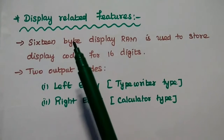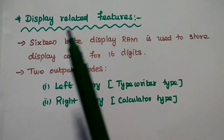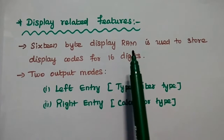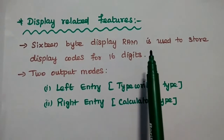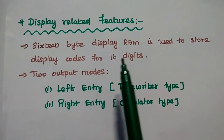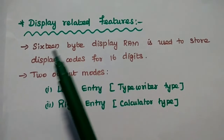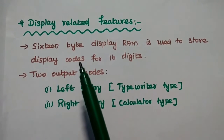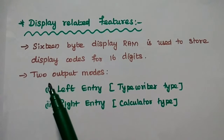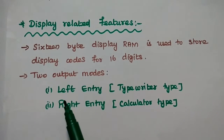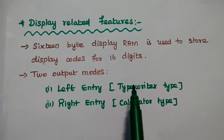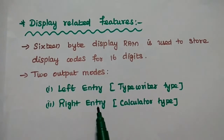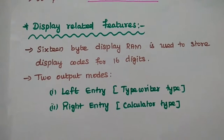Next are the display-related features. 8279 has a 16-byte display RAM which is used to store display codes for 16 digits. There are two output modes: one is left entry, like a typewriter method, and the next is right entry, like a calculator method.